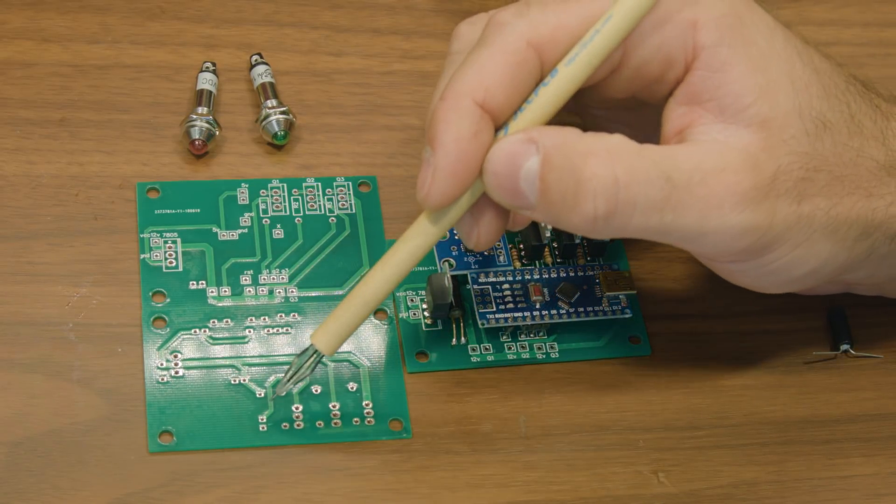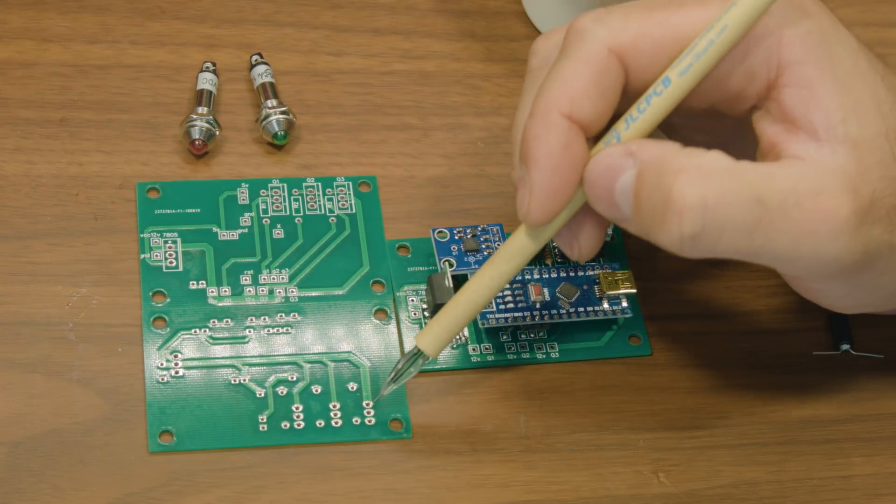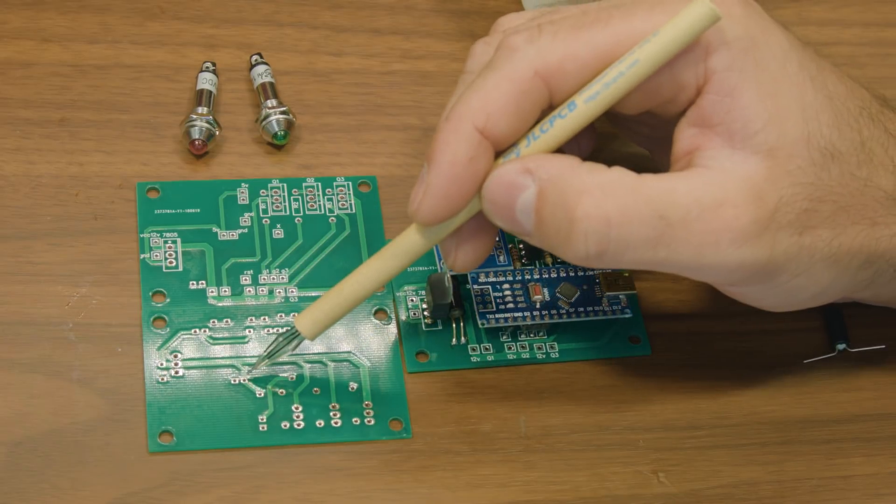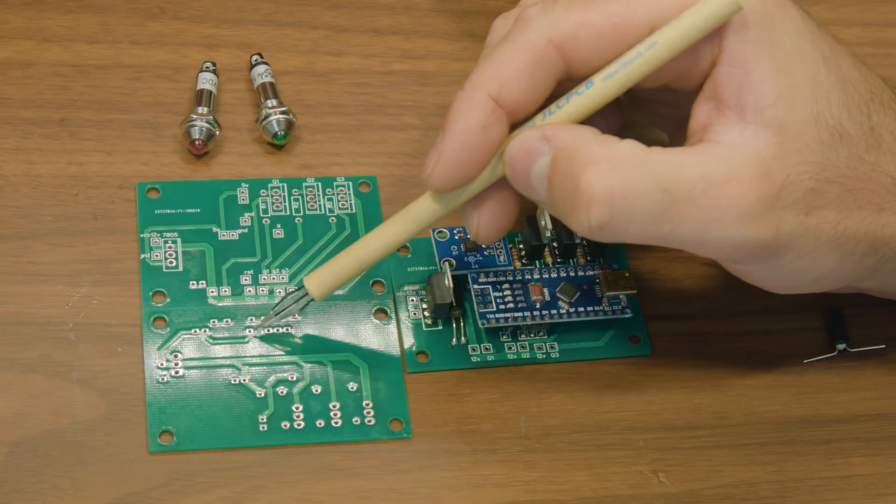Underneath we have the X-axis track from the ADXL to the Arduino and all the ground rails to the three MOSFETs, the Arduino, the ADXL, and the tilt switch to the Arduino reset pin.